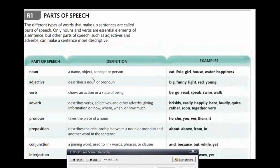Nouns: the name of a person, object, concept, or person. For example, cat, proper nouns like the girl, house, water, abstract nouns like happiness.